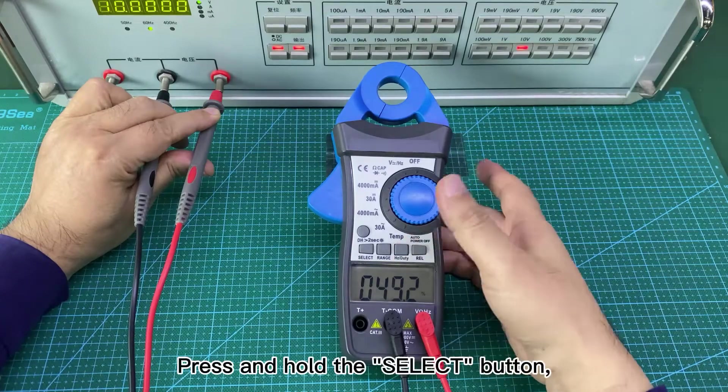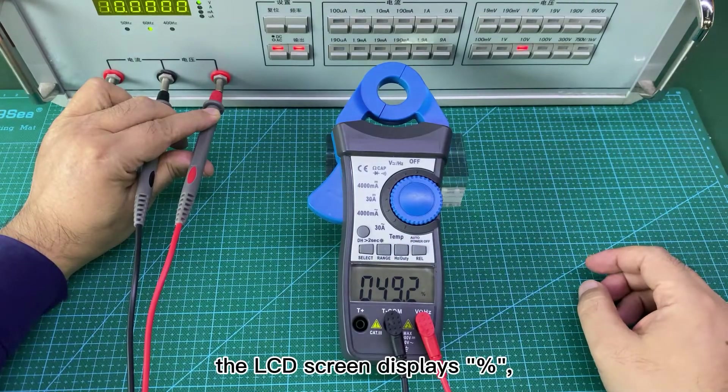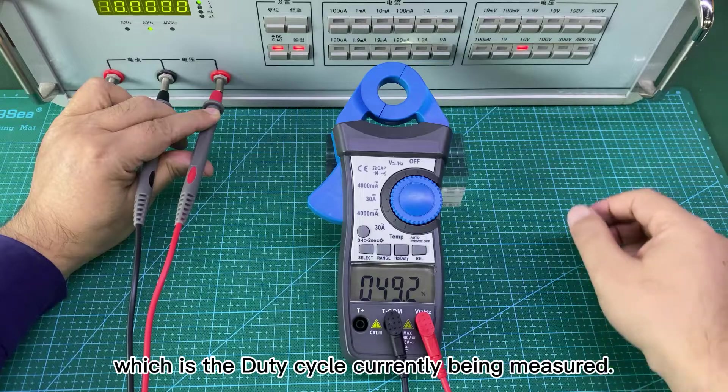Press and hold the select button. The LCD screen displays percent, which is the duty cycle currently being measured.